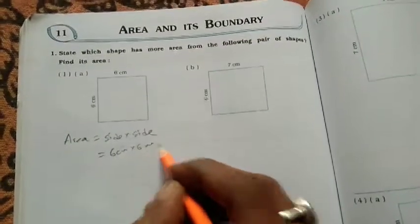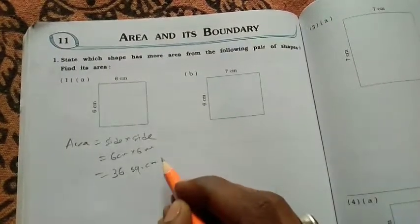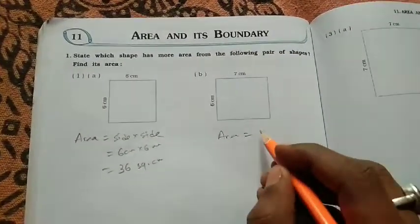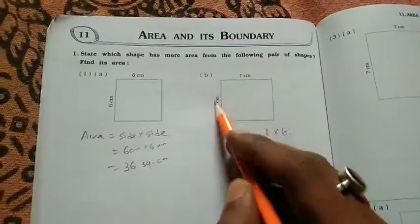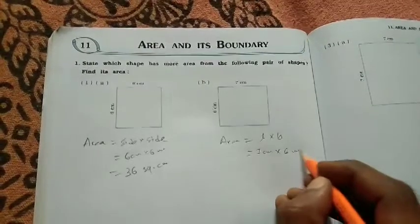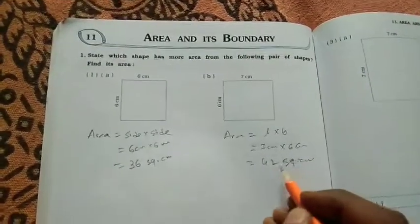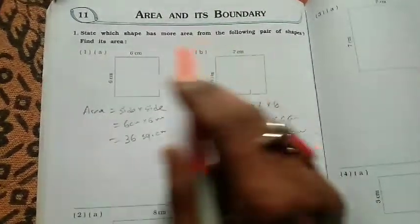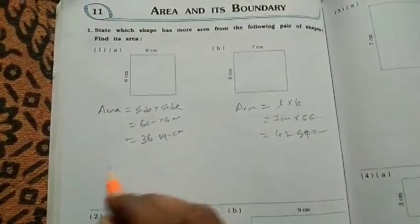Side into side is 6 cm into 6 cm, which is 36 centimeter square. The other one's area is equal to length into breadth. Both are not same. This length is 7 centimeter and breadth is 6 centimeter. Seven into six equals 42 centimeter square. Which shape has more area? B shape has more area.